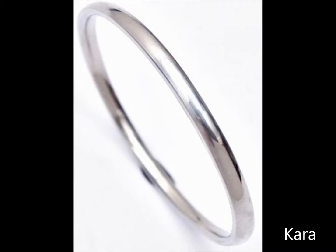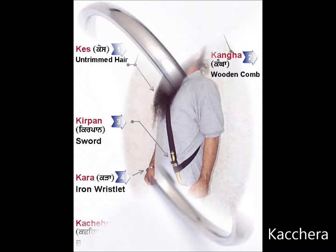Kara: The Sikhs were commanded by Guru Gobind Singh at the Baisakhi Amrit Sanchar in 1699 to wear an iron bangle called a Kara at all times. The Kara is a constant reminder that whatever a person does with their hands has to be in keeping with the advice given by the Guru. It is an iron or steel circle to symbolize life as never-ending, a symbol of permanent bonding to the community, and being a link in the chain of Khalsa Sikhs. The word for link is Kari.